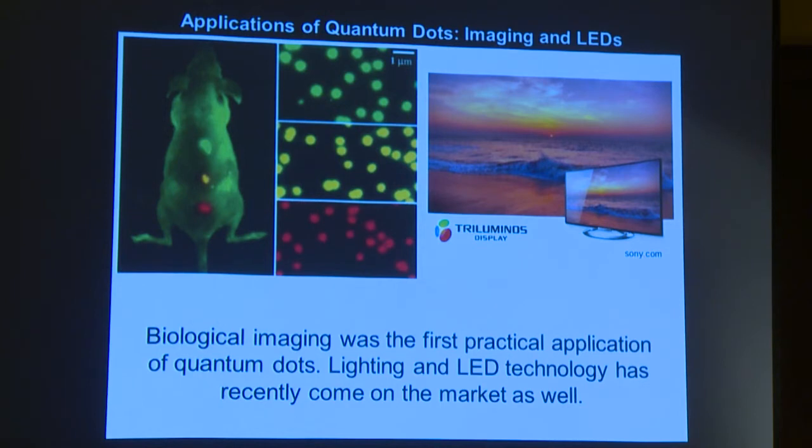The newest application of quantum dots, which is really exciting to me, is in lighting technology. So Sony actually just produced a TV that has this triluminous display. And if you go to Sony.com or go to Best Buy, and you buy any Sony TV that has this triluminous display, you'll be buying a TV that has cadmium selenide quantum dots in it. And so those quantum dots I'm passing around are in this TV. And the reason that they're in this TV is because the color of the emission, the light that the quantum dots produce when you shine light on them, is so spectrally narrow. It means it emits very small range of wavelengths. So the reds are more red, the blues are more blue, the greens are more green. And so the color gamut of colors you produce in this TV are superior to anything else on the market for now.